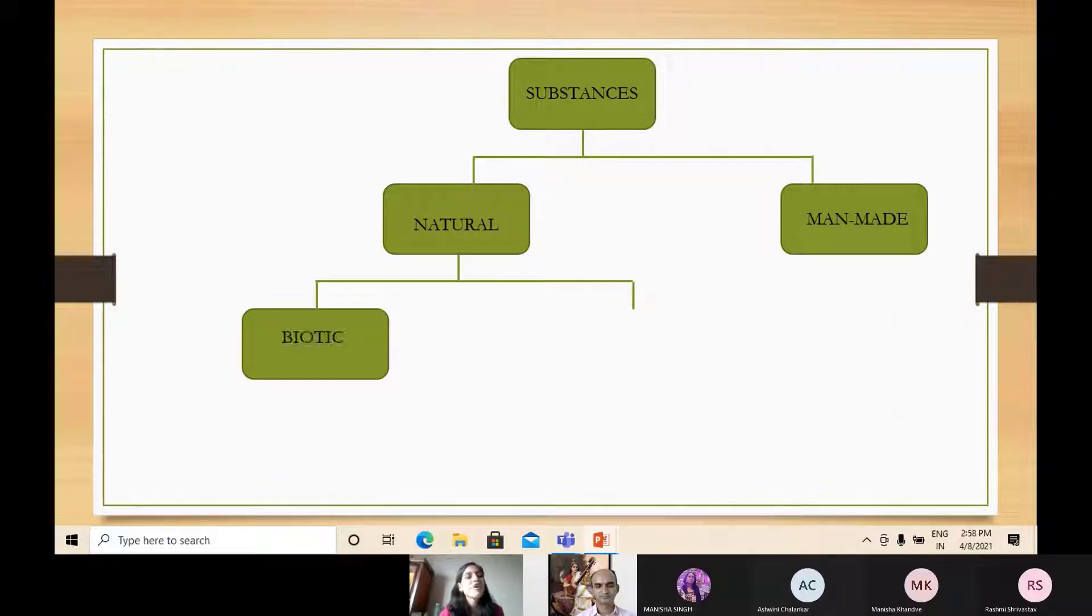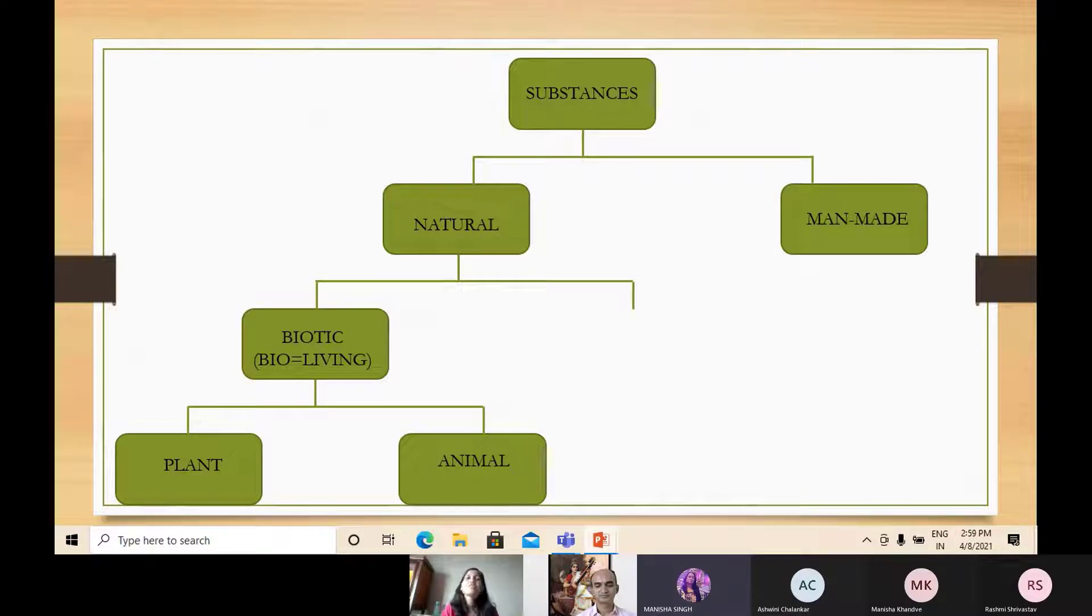The first form is biotic. So the word 'bio' means living. Biotic substances are the substances which we can get from the living organisms. Okay? So can you tell me what organisms are giving us the substances? Can you categorize that? Plants, very good, wonderful job done. And animals, humans.